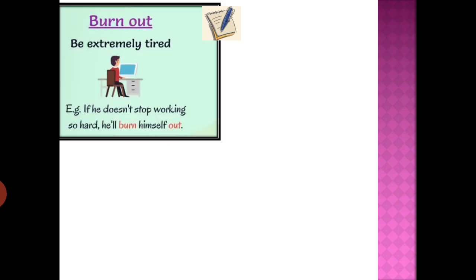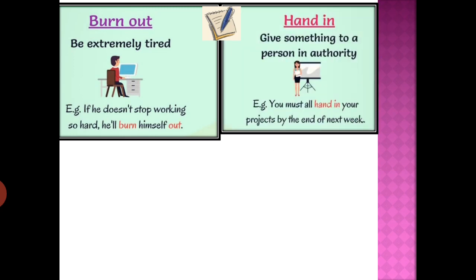Let's look at some examples to understand that a phrasal verb has a completely different meaning from its main verb. 'Burn out' means to be extremely tired — it has nothing to do with burning. For example: 'If he doesn't stop working so hard, he'll burn himself out.' 'Hand in' means to give something to a person in authority.